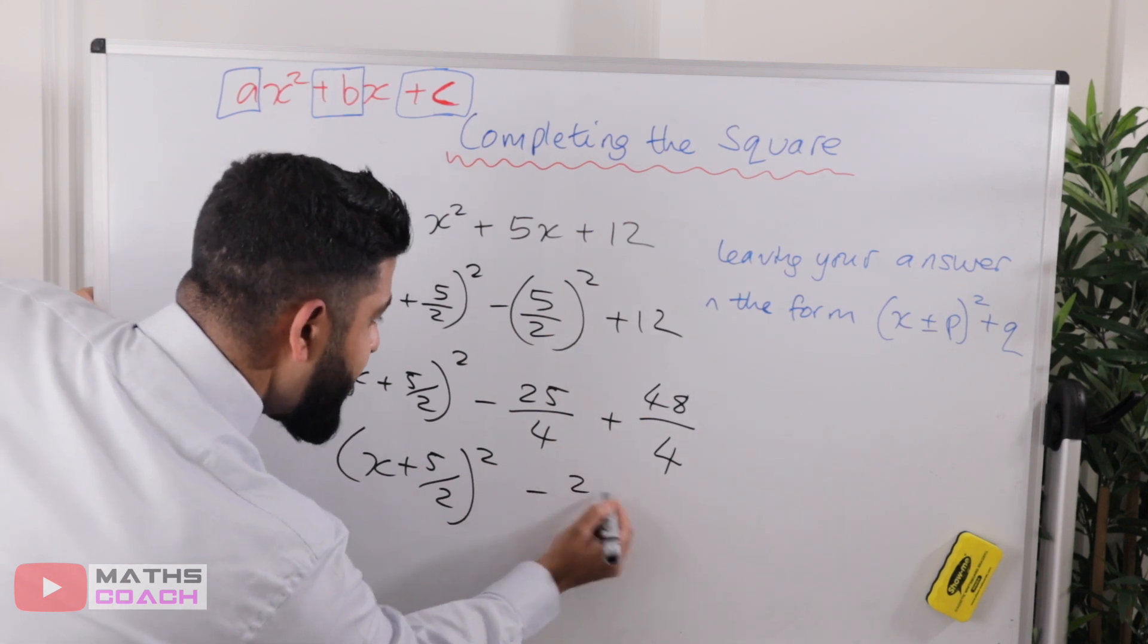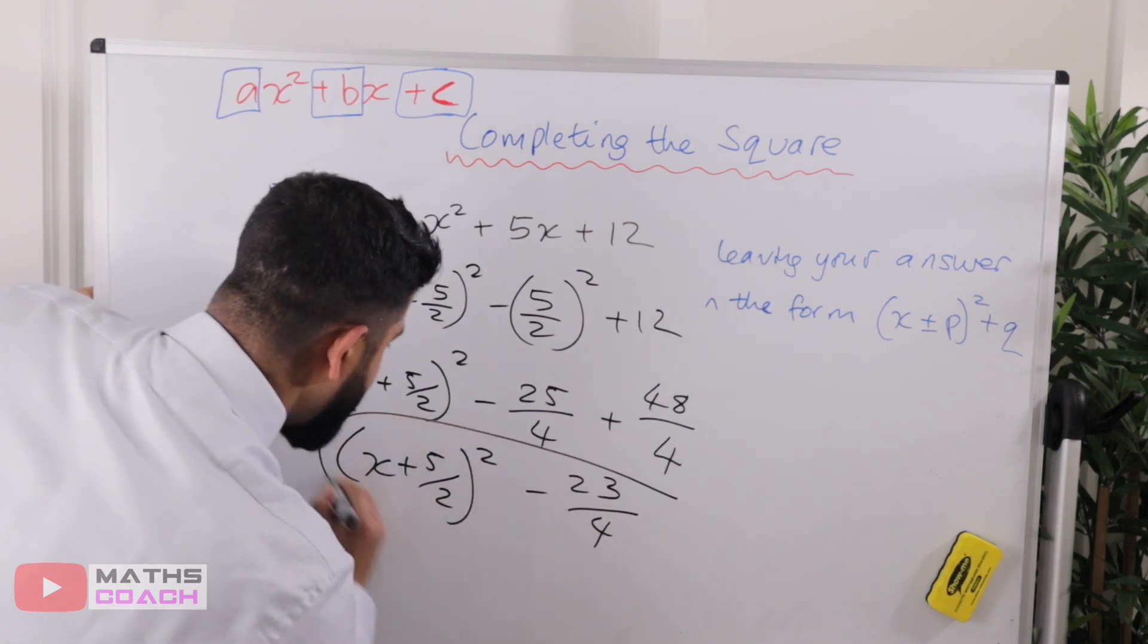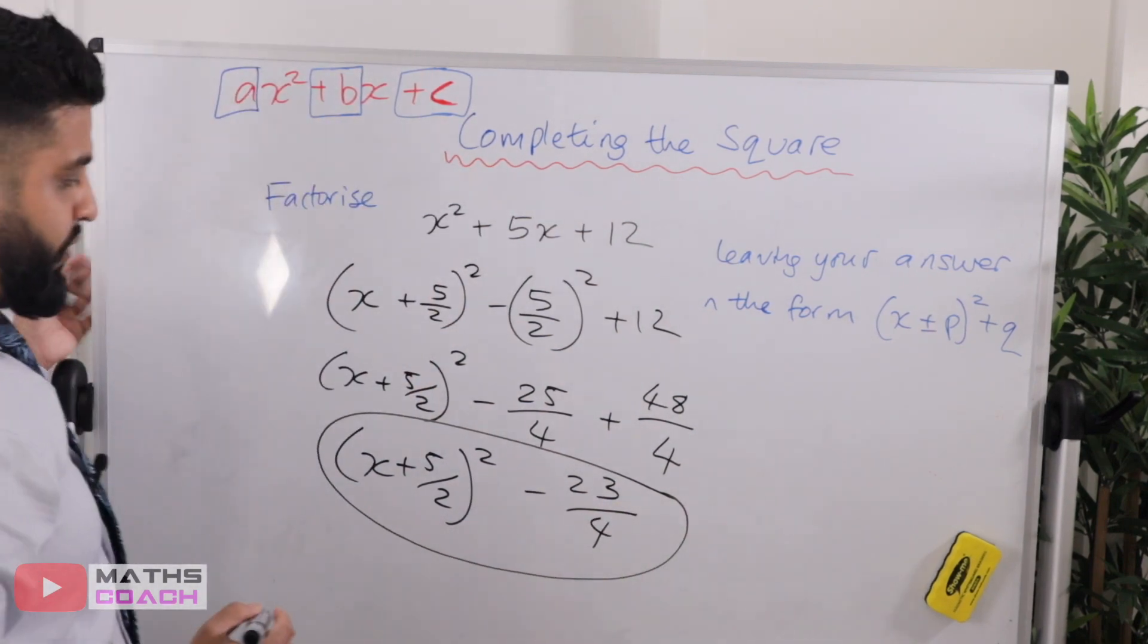So we just need to do -25 + 48, which gives us 23/4. And that is our final answer.